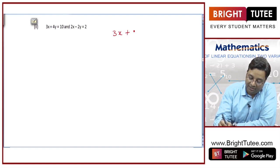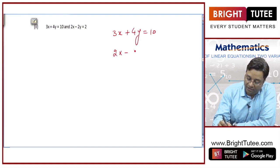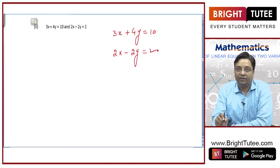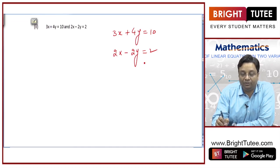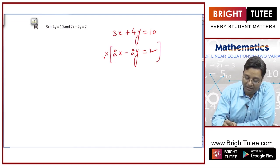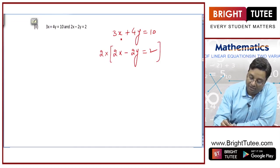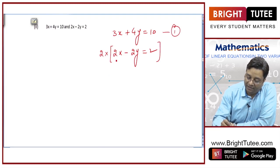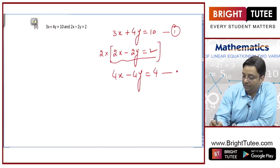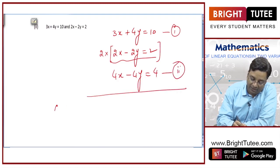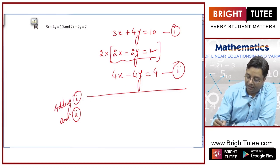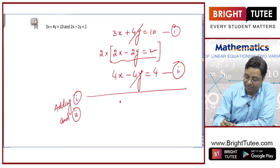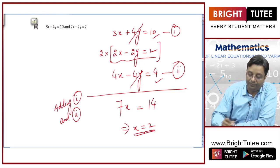Here, I have got two equations: 3x plus 4y equal to 10 and 2x minus 2y equals 2. I find equating the coefficient of y easier in this question. I will multiply the second equation by 2 on both sides. So, 3x plus 4y equal to 10 is my first equation, and the second equation will become 4x minus 4y equals 4. Adding equations 1 and 2, the 4y terms cancel. 3x plus 4x is 7x, and 10 plus 4 is 14, hence x is equal to 2.